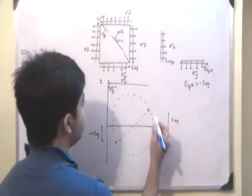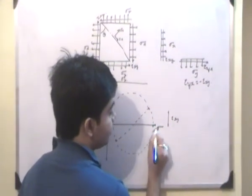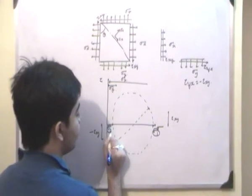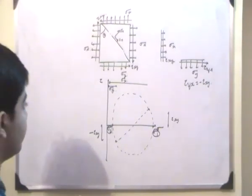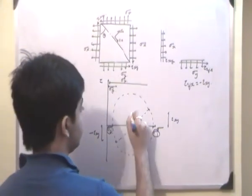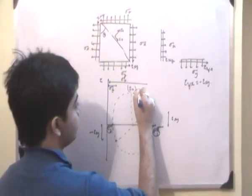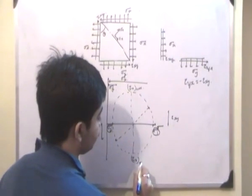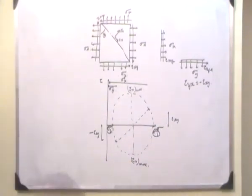At the two points where the circle intersects the sigma axis, tau is equal to zero. The first intersection, sigma-1, represents the maximum value of normal stress, and the second point, sigma-2, represents the minimum value of normal stress. If we need to find the maximum value of shear stress, tau n max, it is equal to the radius of the Mohr's circle — at the top and bottom of the circle, tau n reaches its maximum value.